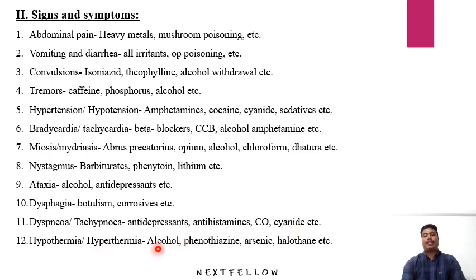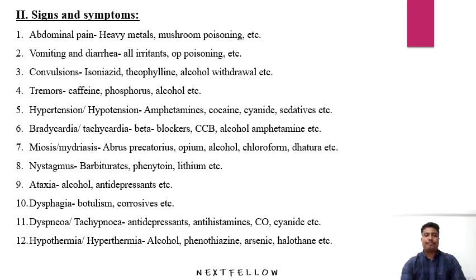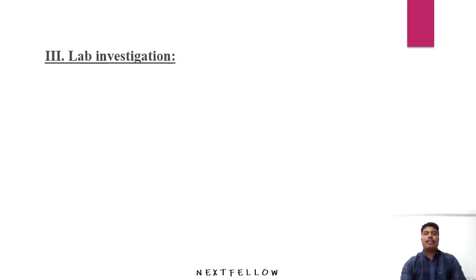Dyspnea and tachypnea are seen in antidepressants, antihistamines, carbon monoxide, and cyanide poisoning. Hypothermia or hyperthermia can be seen in alcohol, phenothiazine, arsenic, and halothane poisoning. There are many more symptoms for specific poisons, which will be discussed when individual poisons are covered.